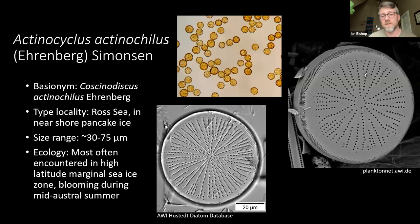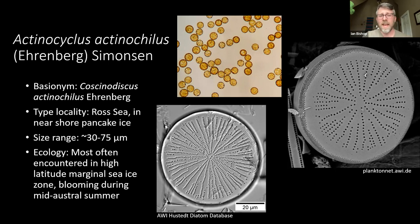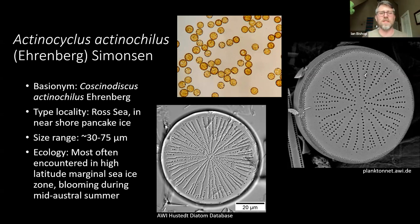My diatom of interest is Actinocyclis actinochilus — a beautiful, large, Coscinodiscus-like diatom. Its type locality is from the very high latitudes in the Ross Sea, closer to the continent, where it was originally described from pancake ice. It can be quite large, up to 75 microns in diameter, and is most often associated with the marginal sea ice zone — that area right next to the sea ice as it retreats in the austral summer, where really productive communities develop. It's found there not in overwhelming numbers, but definitely regularly encountered.